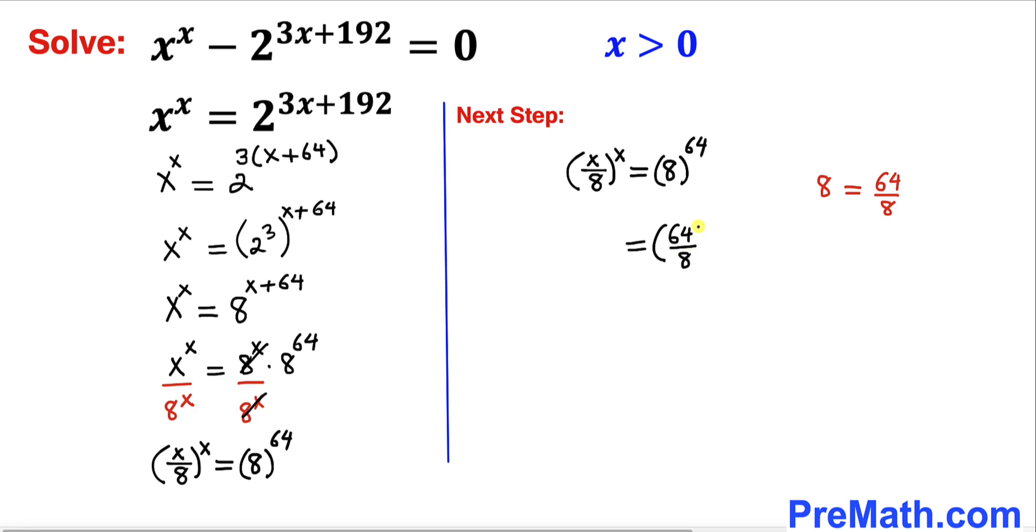Now we can see by comparison: if we replace x with 64, both sides are identical.